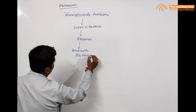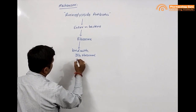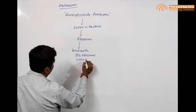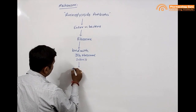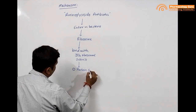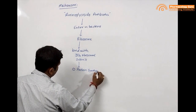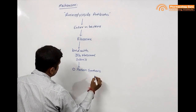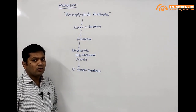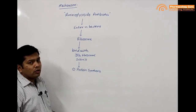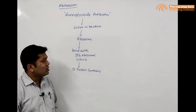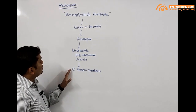They bind with the 30s ribosomal subunit and inhibit protein synthesis. This is the main mechanism of action through which aminoglycoside antibiotics work. The first molecule in the aminoglycoside class was streptomycin, and this is the main mechanism through which streptomycin works.